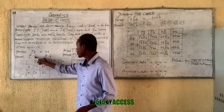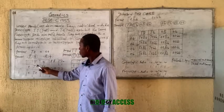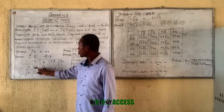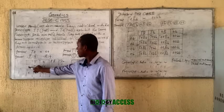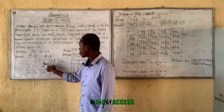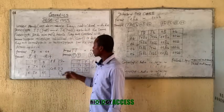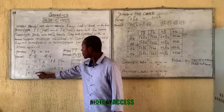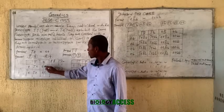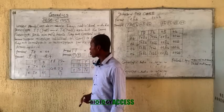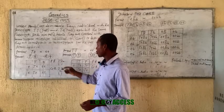These are the two gametes here. You place them into the Punnett square and carry out the cross. Looking at the phenotypic ratio: this and this are tall — that is two. This and this are short — that is two. So it's two ratio two, which is the phenotypic ratio.